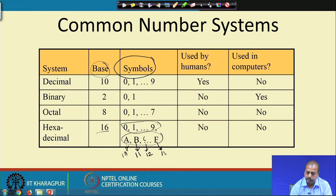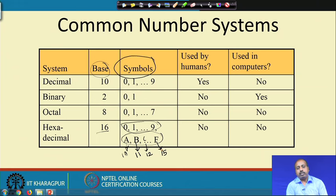You could use some other notation like alpha, beta, gamma, delta instead of A, B, C, D — there is nothing wrong with using different notations for these symbols. But what is required is that you must specify the corresponding integer value for each symbol; otherwise you will not be able to represent a quantity in that number system.